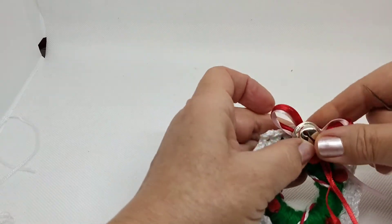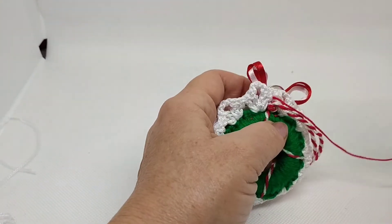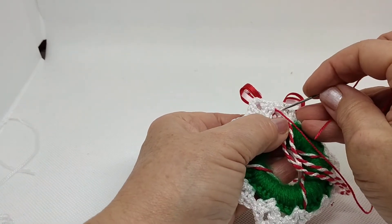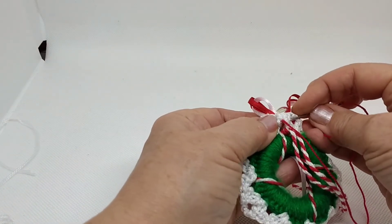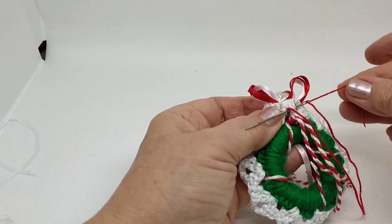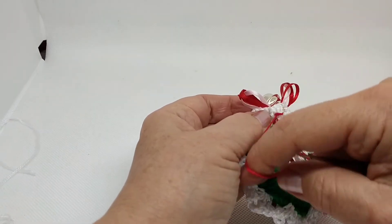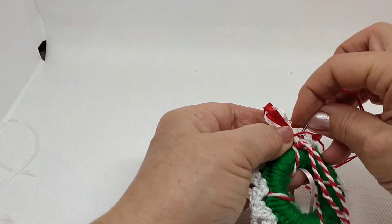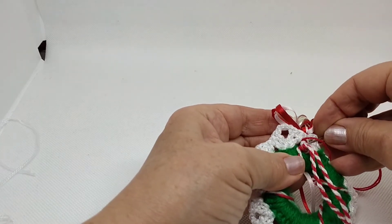Y lo vamos a colocar aquí justo en el centro que ya hemos marcado antes. Le damos una puntadita por detrás para que quede disimulado y perdemos el cabito.